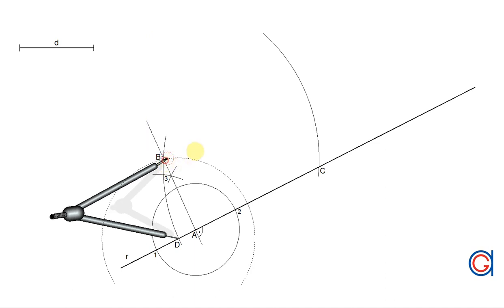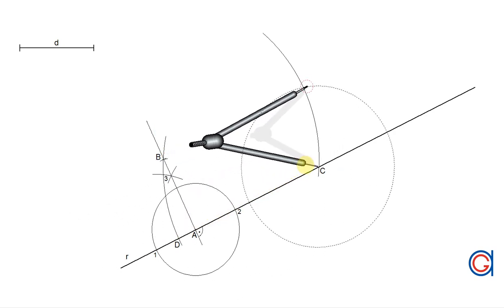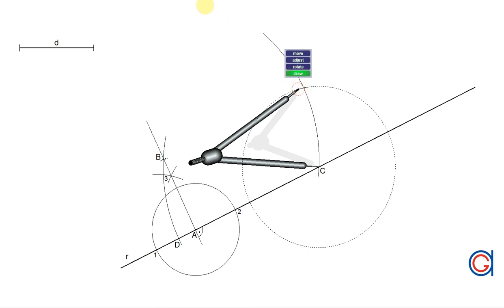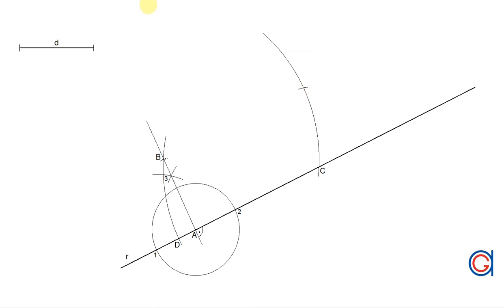To continue, setting our compass to the length BD we're going to transport this. Setting the compass on point C we scribe an arc on our previously drawn arc to get a new point which we will call point E.